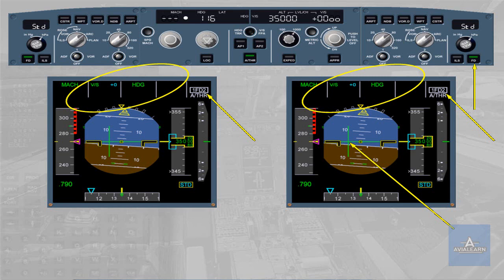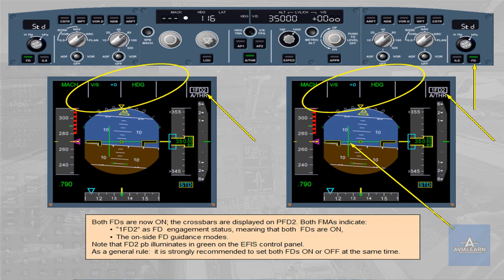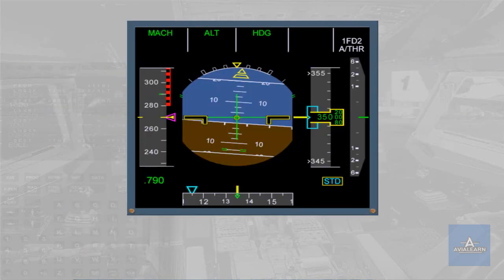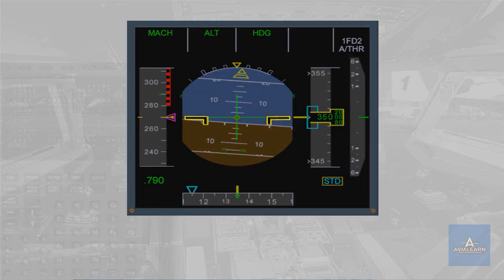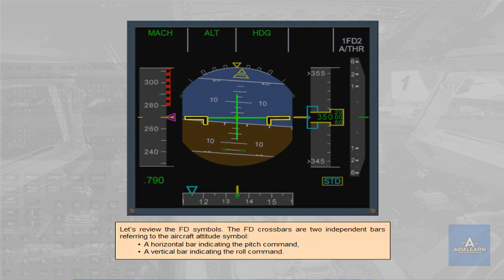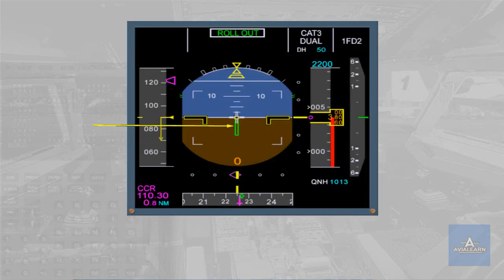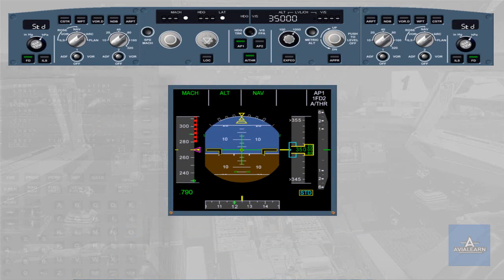As a general rule, it is strongly recommended to set both FDs on or off at the same time. The flight director crossbars are two independent bars referring to the aircraft attitude symbol: a horizontal bar indicating the pitch command, and a vertical bar indicating the roll command. The roll bar is replaced by a yaw bar index for takeoff and landing rollout functions from an ILS-equipped runway. The yaw bar helps the pilot to properly track the localizer on the ground in low visibility conditions. The principle of the flight director crossbars has been reviewed in the EFIS module.